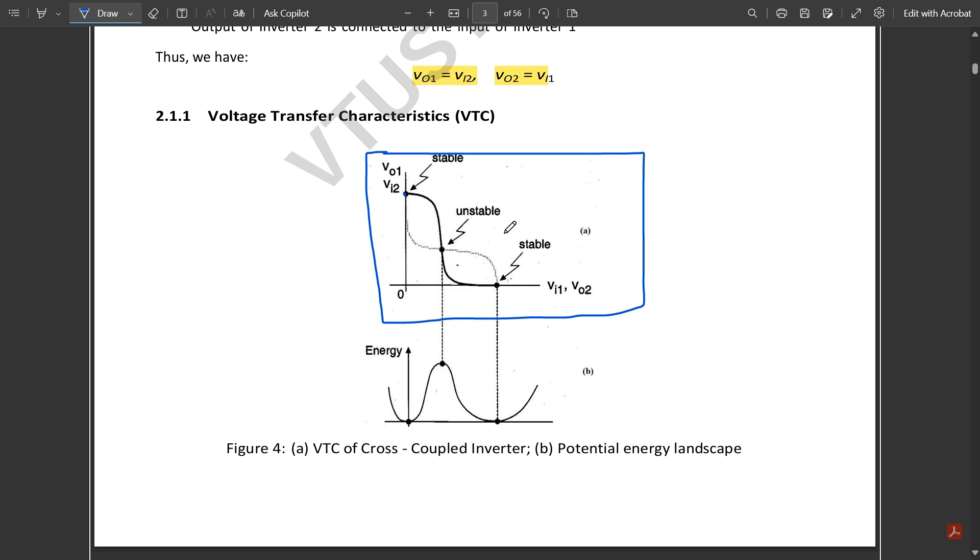If you compare it with the energy graph, the unstable point would be at the highest state, whereas in the stable state it would be at the lowest stage. This is the voltage transfer characteristic of a cross-coupled inverter.